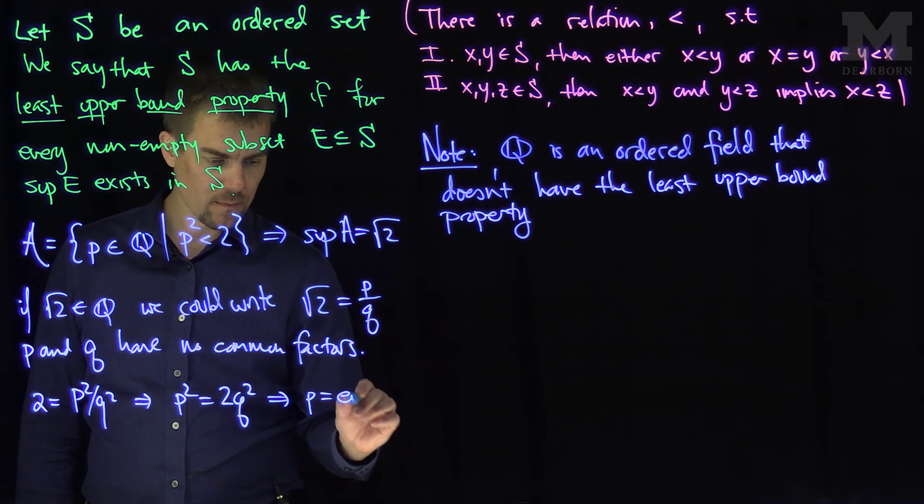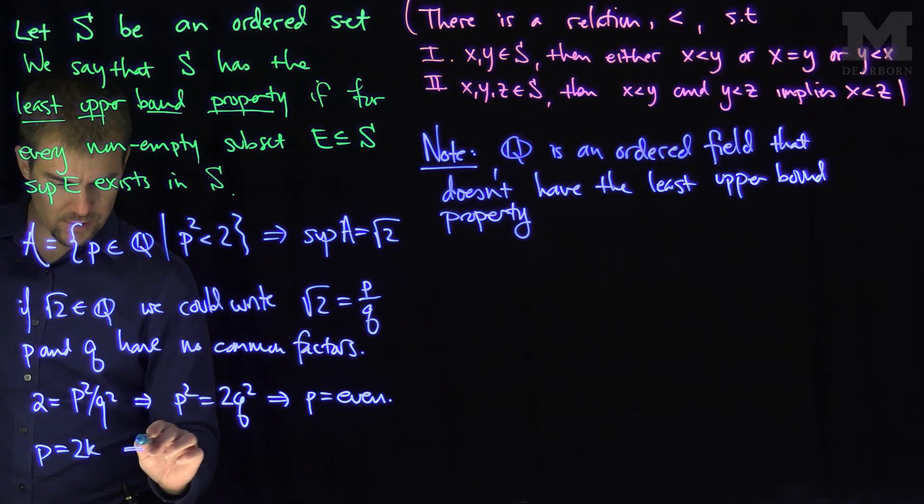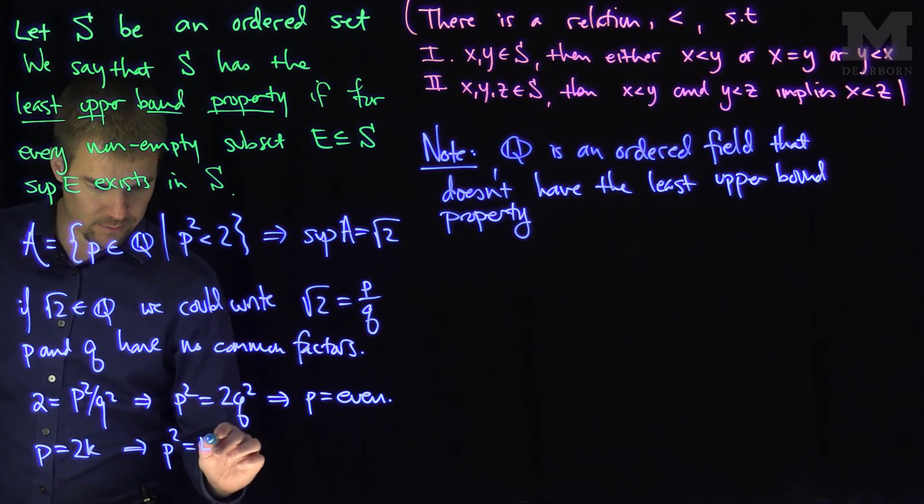Because the only way the square of something is going to be even is if the number is even. So this tells me that p is even. Well if p is even, then p is equal to 2k.